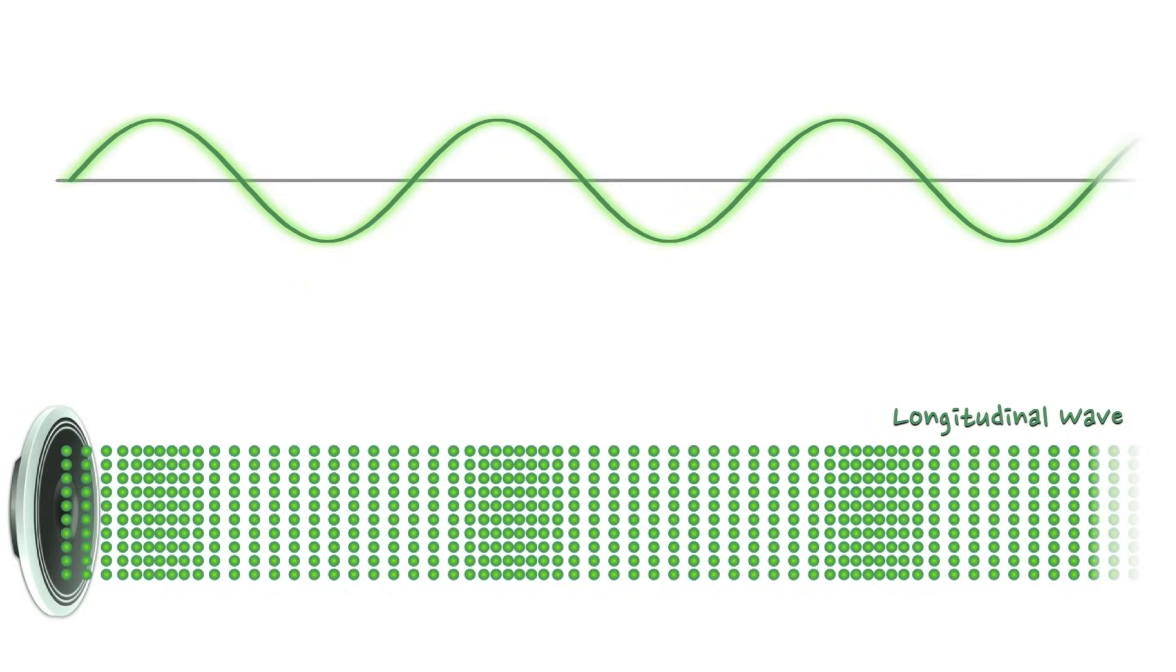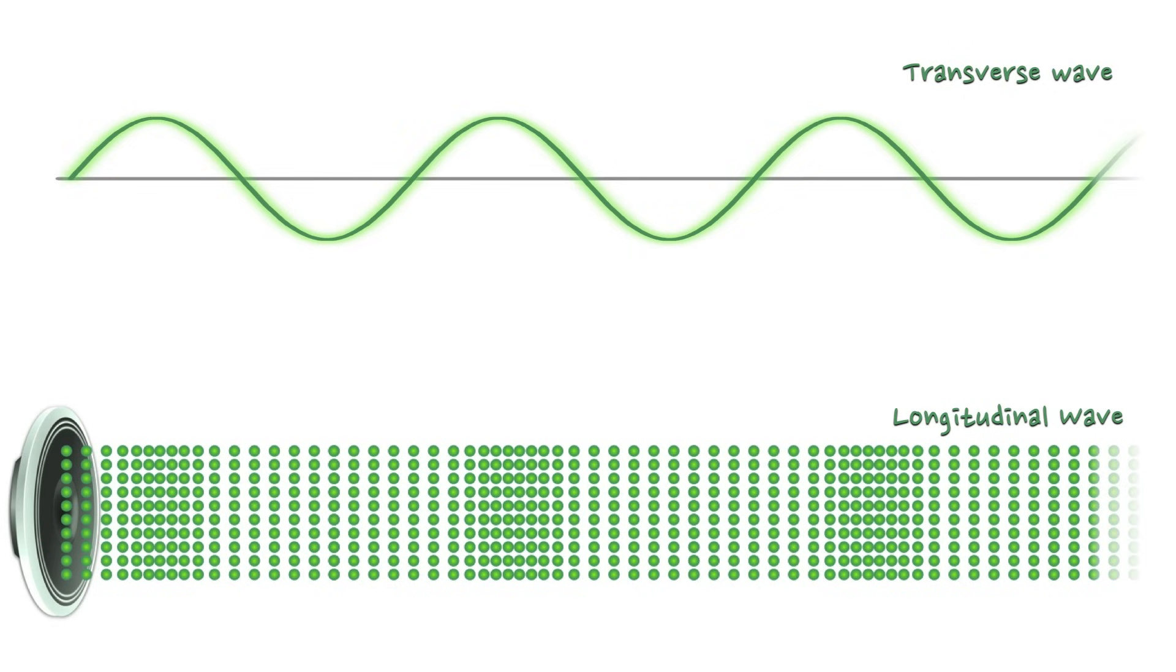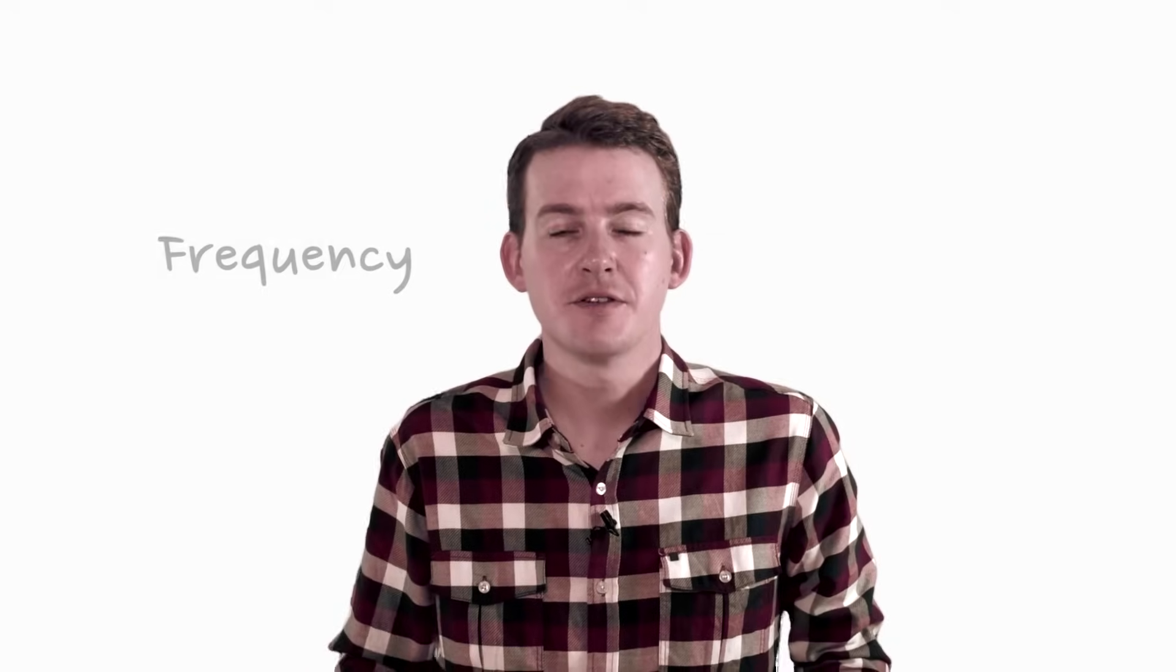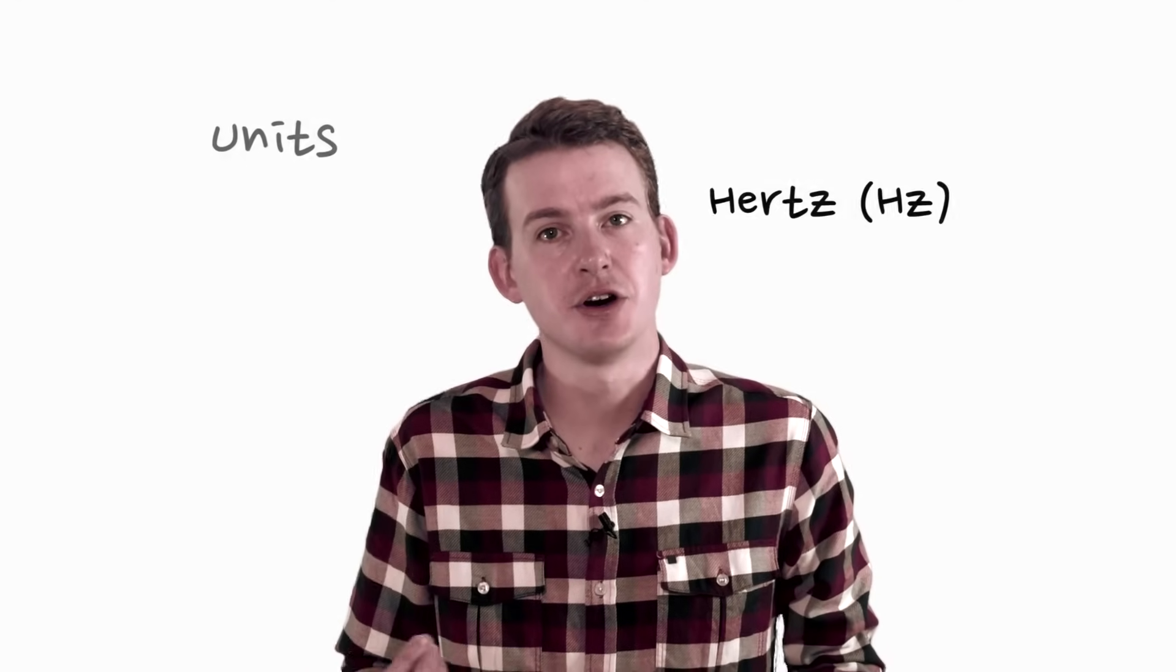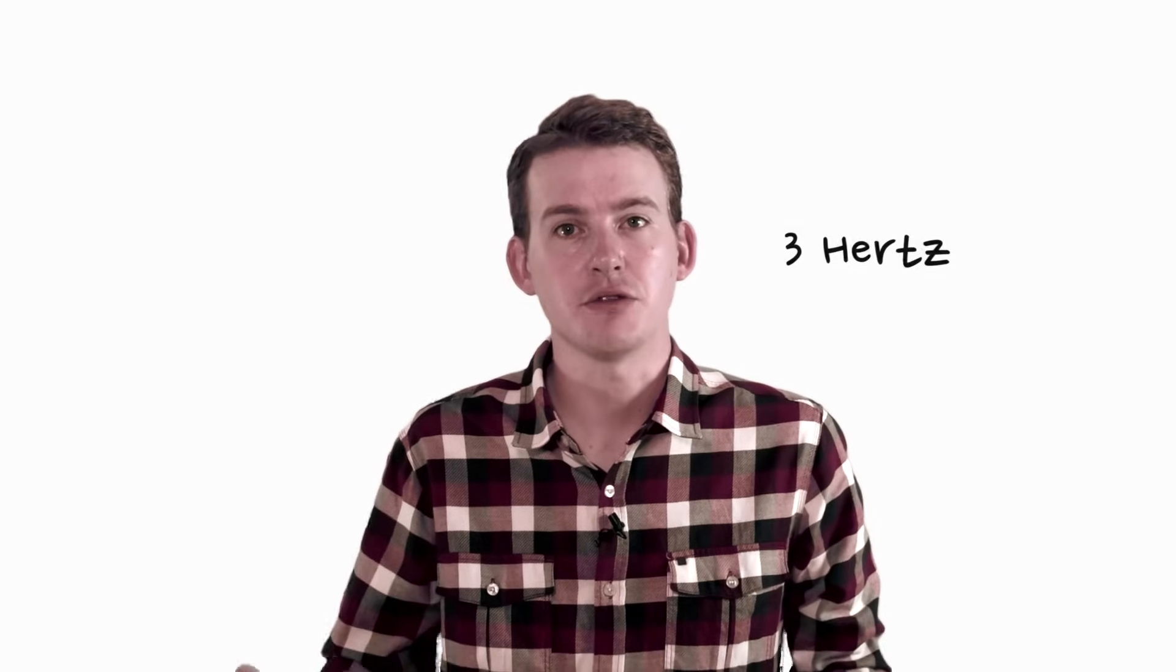On this diagram we can see from the transverse waves that there are three waves within a time frame of one second. This means that the speaker is vibrating at a rate of three pulses per second, and this is telling us the frequency. Frequency has the unit hertz, and so we can say that this speaker is generating a sound of three hertz.